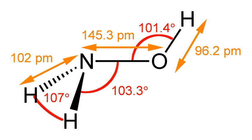Hydroxylamine is an inorganic compound with the formula NH2OH. The pure material is a white, unstable crystalline, hygroscopic compound.